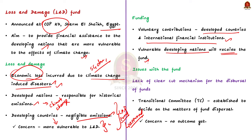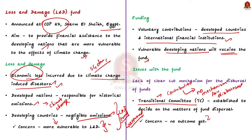Now let us see the issues in the loss and damages fund highlighted in the editorial article. The first issue is regarding fund dispersal. Some countries have contributed recently, but the problem is there is no clear-cut information regarding the dispersal of funds — no mechanism to decide which developing countries will receive the fund. The COP has established a transitional committee to decide on fund disposal, but till now, no commitments have been reached. So despite the availability of funds, there is no clear mechanism to disperse them.